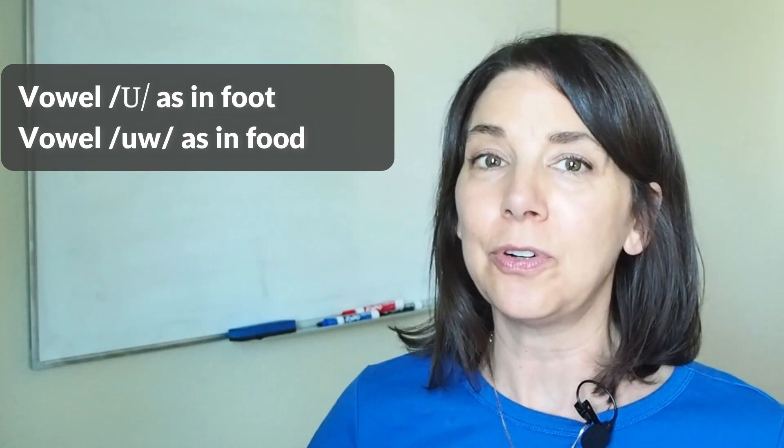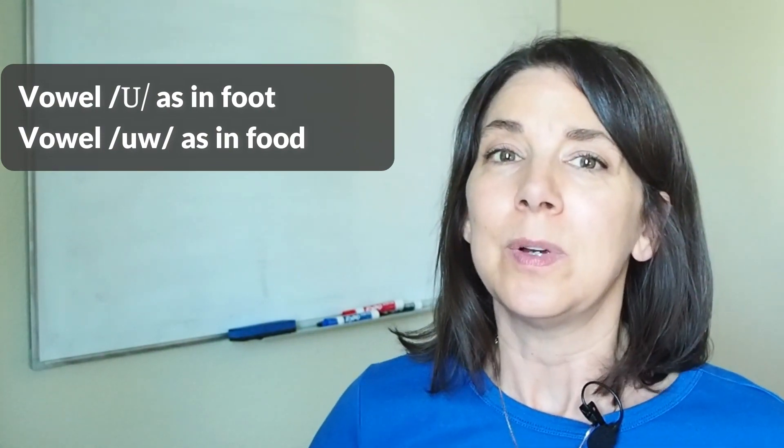That got me thinking about how tricky English vowels are and about how some of the vowels are difficult to hear or they might not exist in your language so it's difficult to learn them. However, this vowel uh is very common and it's important to know the difference between the vowel uh and the vowel oo which is in words with similar spellings.